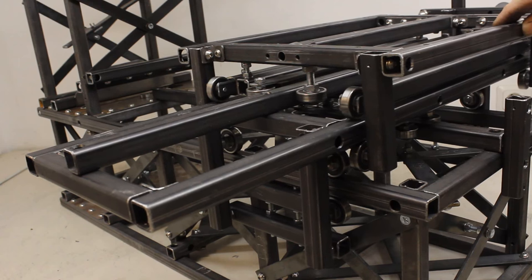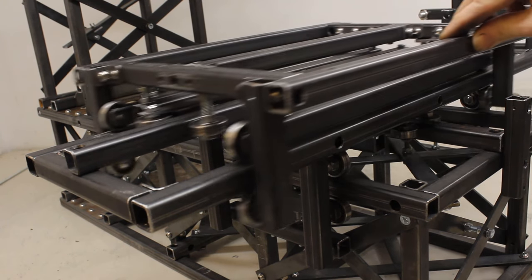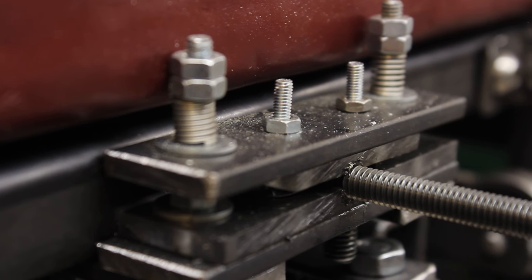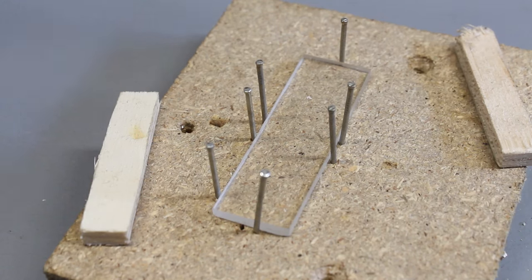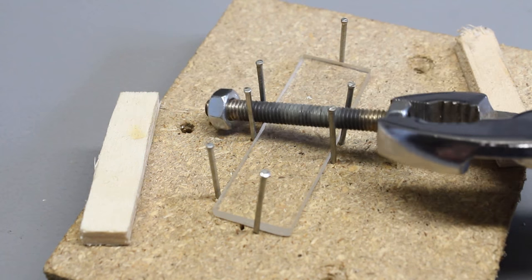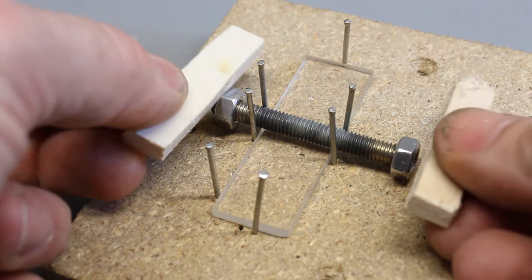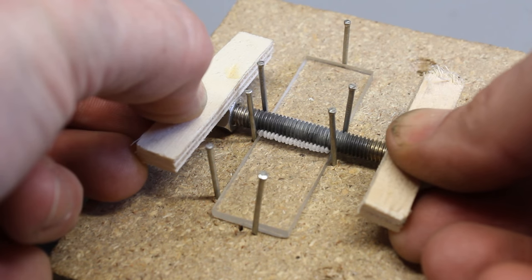The axes are guided by ball bearings, and 6mm threaded rods convert the rotational movement of the motors into linear movement. With the self-made plastics thread, you get a precise movement as demonstrated in the citizen science section of this year's Hackaday Prize.